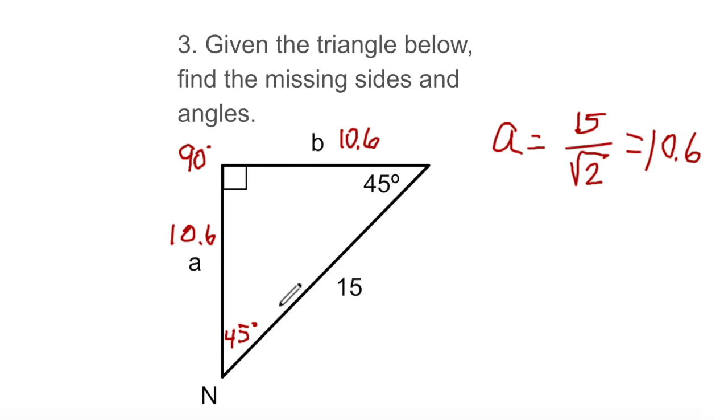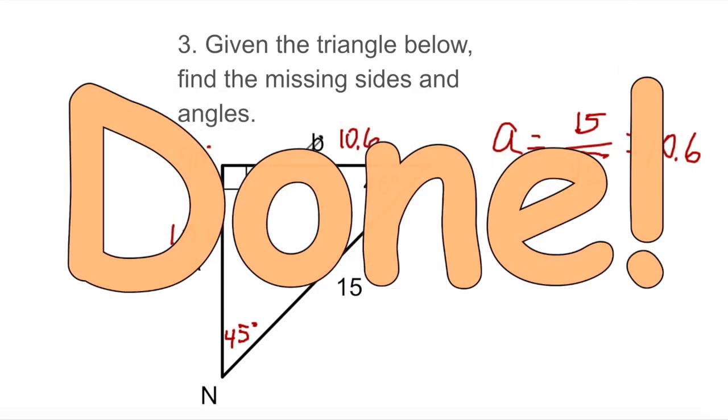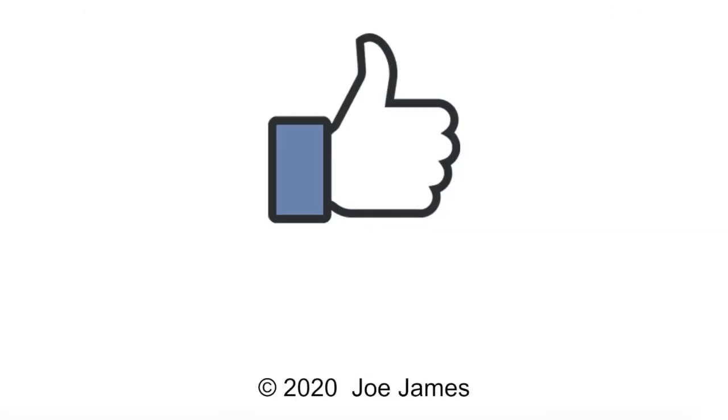Or if you don't know either of the angles but you do know one side and the hypotenuse and those are of the ratio 1 to root 2, then the other side is going to be the same as this side. I hope this video is helpful for you. If so, please click the like button and subscribe to my channel. I'm Joe James, thanks for watching.